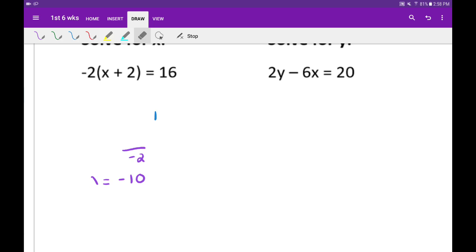Another way is since negative 2 goes into 16 evenly, even if it didn't, you can use some calculator stuff. What I can do is if I want to get the parenthesis isolated, I can divide by negative 2 both sides. Those cancel. So now I'm left with x plus 2 equals a negative 8.